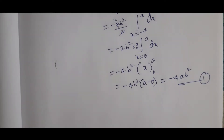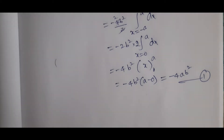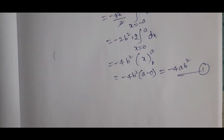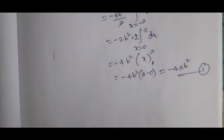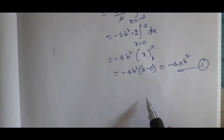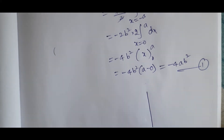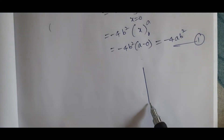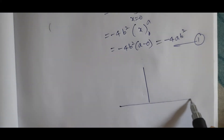Now we are going to evaluate LHS. We will draw the diagram — Rectangle 1 — to understand the path of integration.